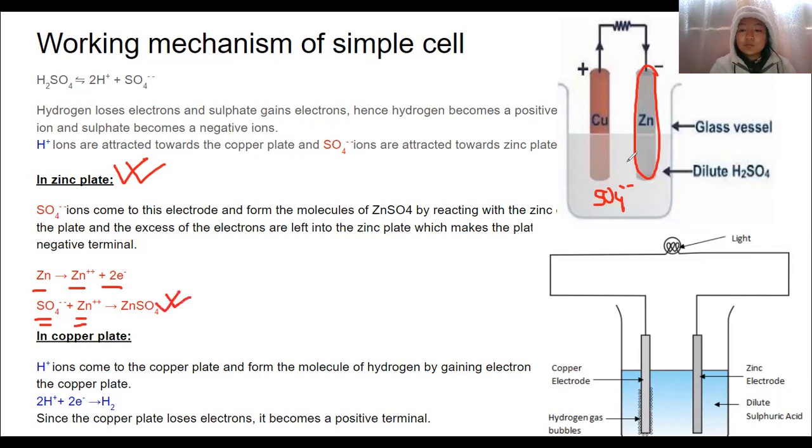And over time, what we observe is that this plate here, this metal rod here becomes thinner and thinner. It's because zinc metals are dissolved, are solubilized in the electrolyte. Zinc combines with sulfate ions to form zinc sulfate salt. So, this explains the overall chemical reactions in the setup here.